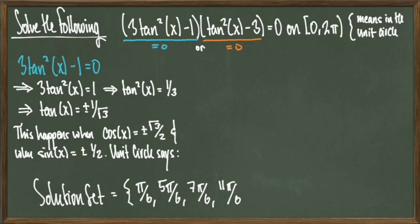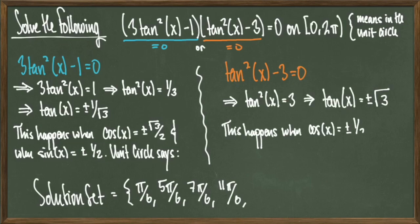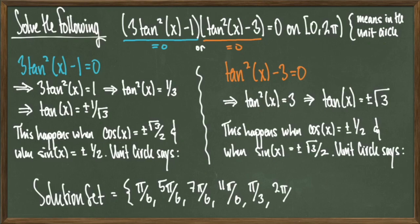So we're about halfway done — we've determined when 3 tan squared of x minus 1 equals 0. Now we need to determine when tan squared of x minus 3 equals 0. Setting that equal to 0 and solving for tangent, we get tan of x equals plus or minus square root of 3. This happens when cos of x equals plus or minus 1/2 and sin of x equals plus or minus root 3 over 2, giving us additional solutions pi over 3, 2 pi over 3, 4 pi over 3, and 5 pi over 3.